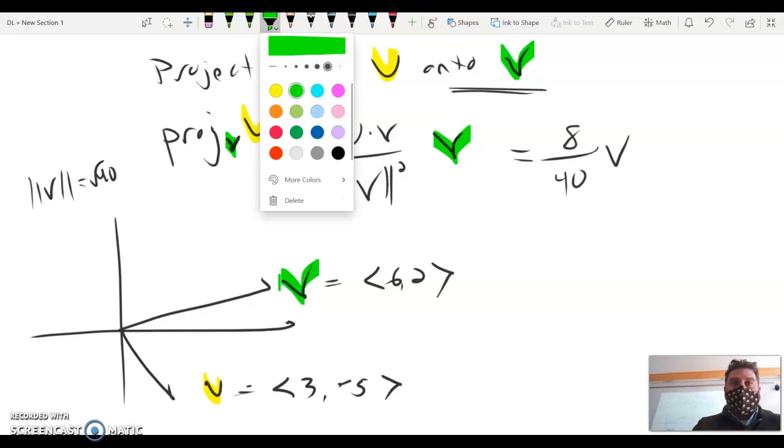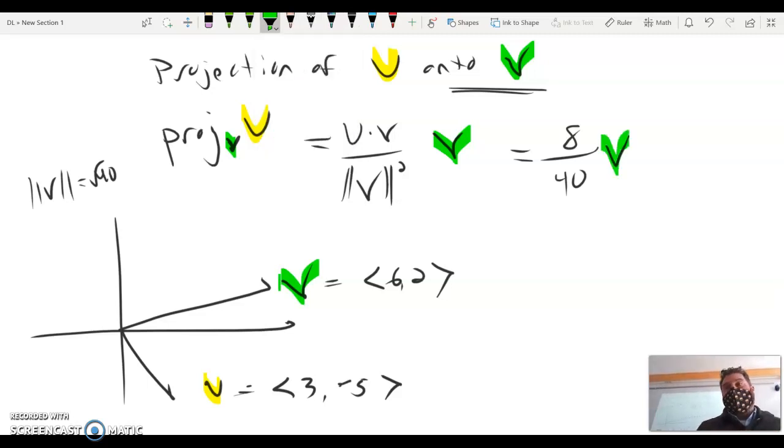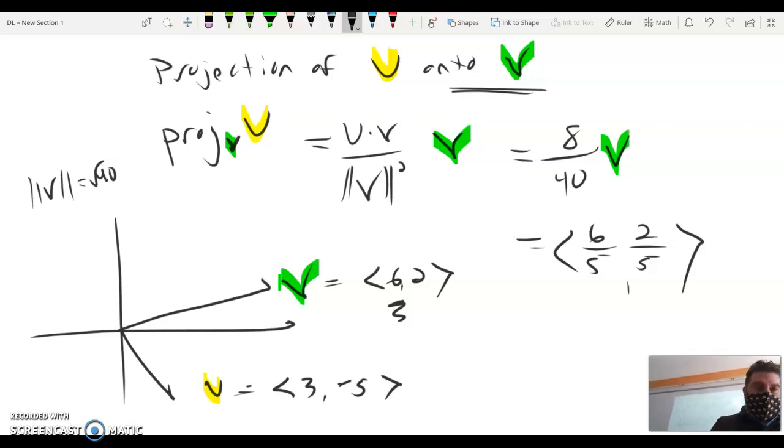So again, this projection of one vector onto the other has to land on, in this case, v. We're projecting u, the yellow vector, 3 negative 5, onto v, the green one. And so all I'm going to do is really scale that down by 1 fifth. So I'm going to take a fifth of 6, which is 6 fifths. I'm going to take a fifth of 2, which is 2 fifths. So I just scaled down the vector v by 1 fifth. And so therefore, maybe just to eyeball it really quickly, maybe that right there is a projection of u onto v, which would be 6 fifths, 2 fifths. And again, note it lands on the vector v.